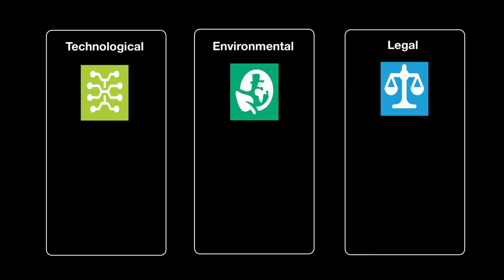Our discussion then moved to technological changes across the dynamic external environment. We covered Computer Aided Design (CAD) and Computer Aided Manufacturing (CAM), used by operations departments to speed up and improve accuracy in production. Companies have also increasingly adopted Enterprise Resource Planning (ERP) software. The widespread use of the internet and related applications has benefited businesses, and due to COVID-19 and remote working, businesses found new ways to work remotely and in some cases became more efficient.